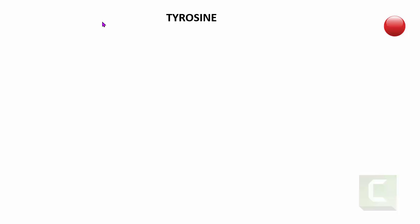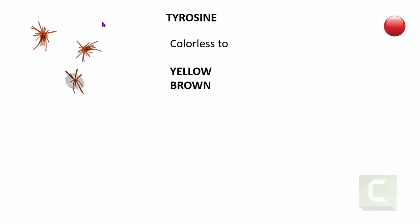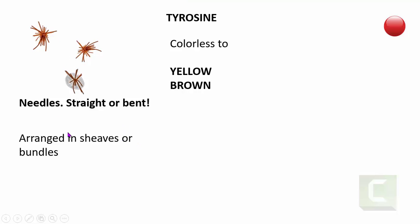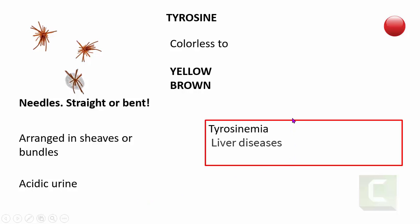The next amino acid crystal is the tyrosine crystal, which is colorless or most often yellow-brown in color. These are needle-shaped crystals — either straight or bent — and are almost always arranged in sheaves or bundles. They are found in acidic urine. Tyrosine crystals are seen in tyrosinemia, an inborn error of metabolism where the body cannot metabolize tyrosine, leading to its accumulation and excretion in urine. They are also found in various liver diseases.